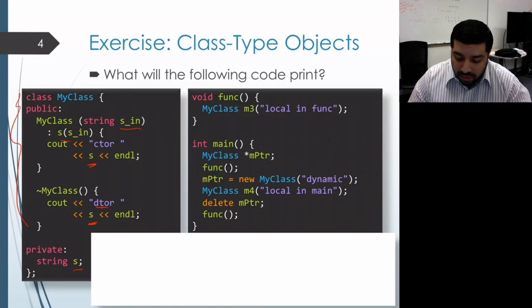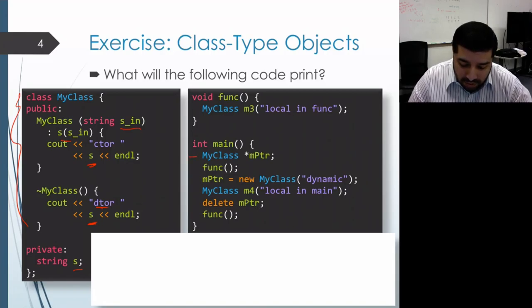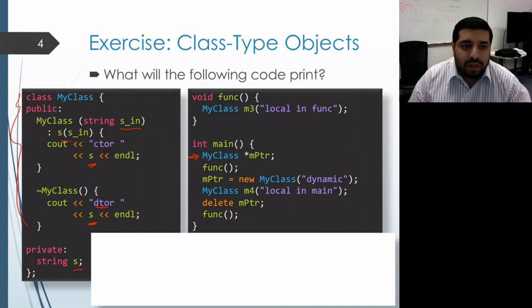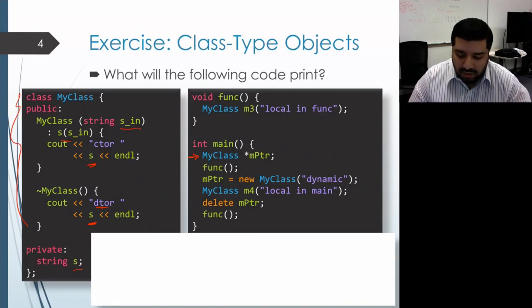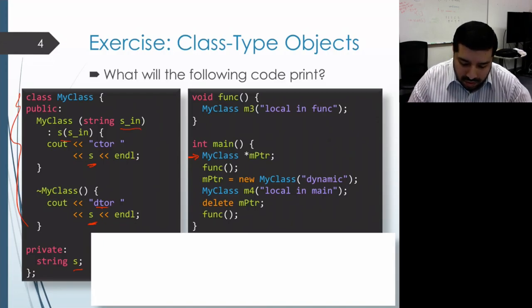We start with main as usual. The first thing that happens in main is that we create a local variable m_pointer. This variable itself is not a class type — it's a pointer. This means it doesn't actually invoke a constructor. Instead, this pointer gets default initialized to some undefined value. The next thing we do is call func.